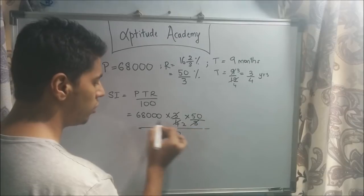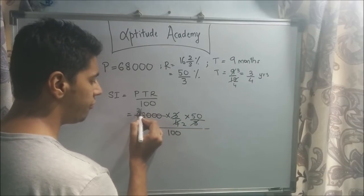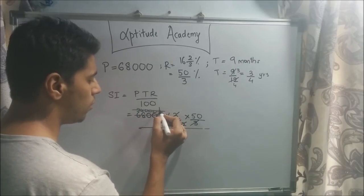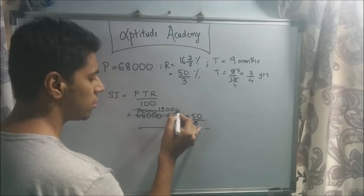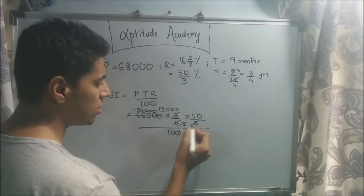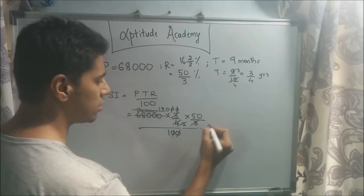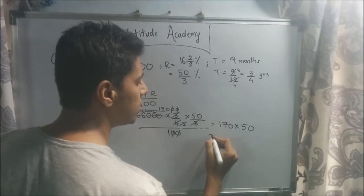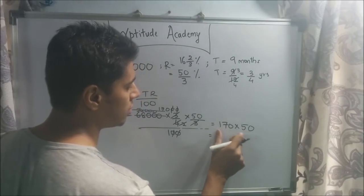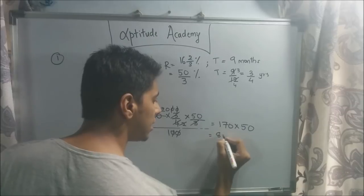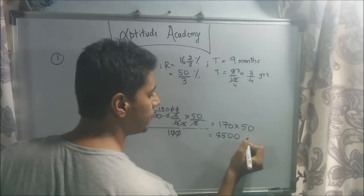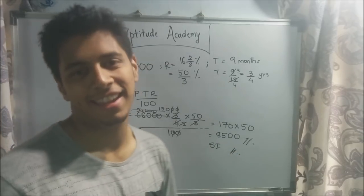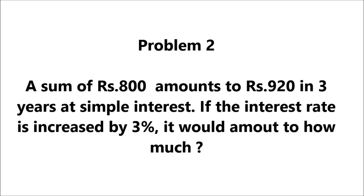Plugging in: SI = 68,000 × (3/4) × (50/3) ÷ 100. The 3s cancel, giving 68,000 × (1/4) × 50 ÷ 100, which simplifies to 17,000 × 50 ÷ 100, then further to 170 × 50, which equals 8,500. So the simple interest is 8,500 rupees.